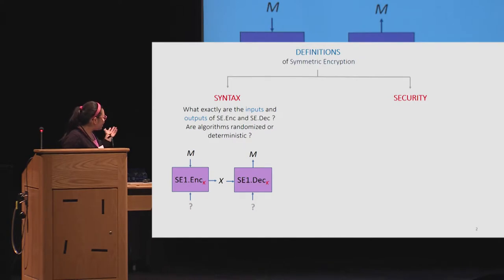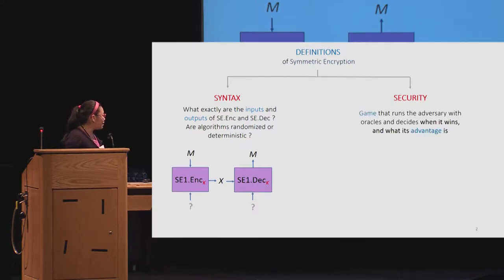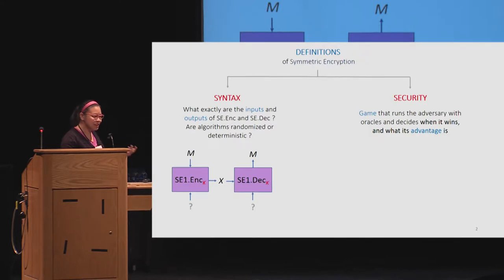As shown on the previous slide, we all have the message, the ciphertext output, and the key. What syntax should really tell us is what additional inputs your algorithm should be getting. For security, we usually define this using a game where an adversary has oracles, and the game decides when the adversary wins and how well the adversary is doing via an advantage function.